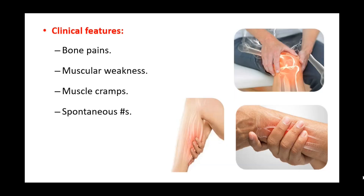Clinical features: The first is bone pain. The patient complains of pain all over the body; it is of a diffuse kind, ranging from backache to simple diffuse pain. The bones become tender. There is also muscular weakness, and the patient feels very weak — it may be difficult to climb up and down stairs.